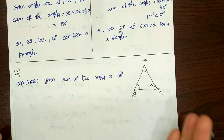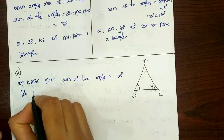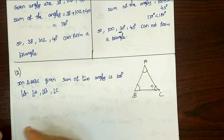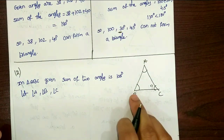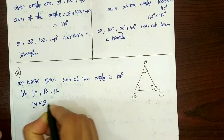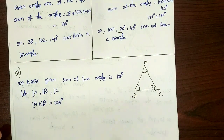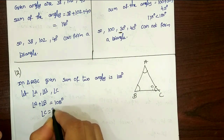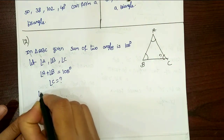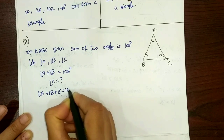Given sum of 2 angles is 105 degrees. The total triangle has 3 angles: A, B, C. We know that angle A plus angle B plus angle C equals 180 degrees. This is already a statement — triangle angle sum is 180 degrees.